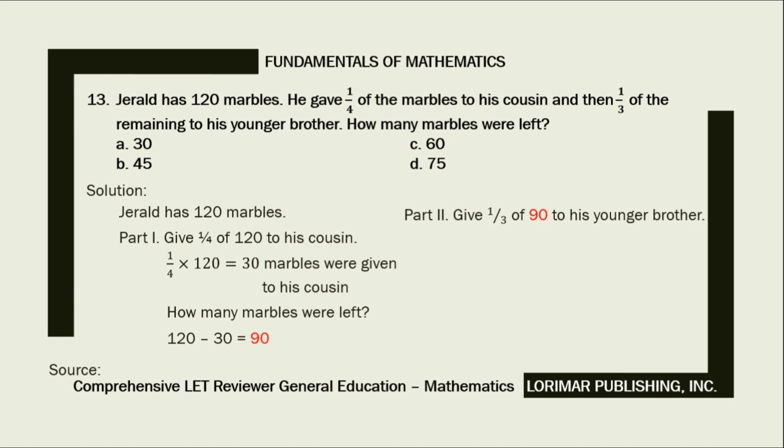Out of 90 marbles, he had to give 1/3 of that to his younger brother. 1/3 of 90 is 1/3 times 90 equals 30. So 30 marbles were also given to his younger brother. How many marbles were left all in all? 90 minus 30 equals 60. The correct answer is letter C, 60.